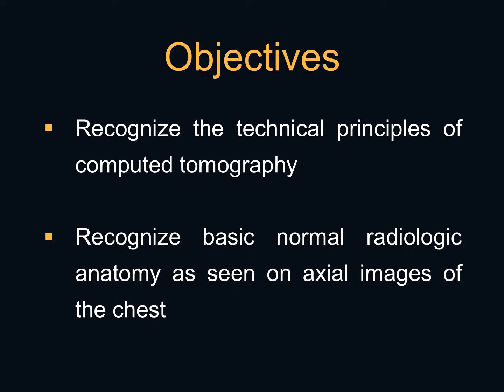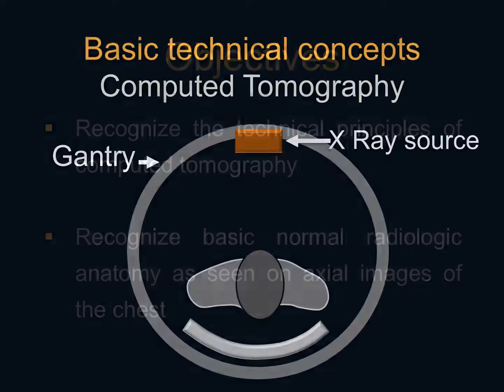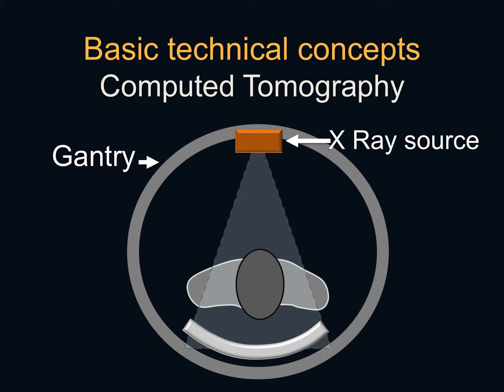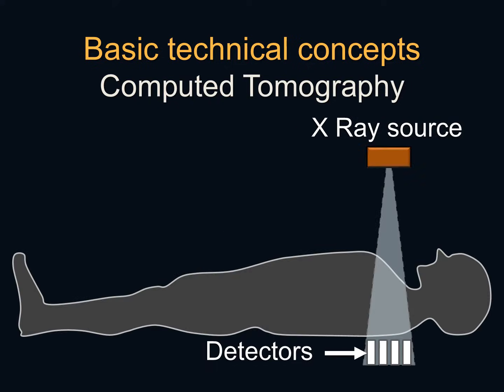The second objective is to recognize some basic normal radiologic anatomy as we see it on axial images on chest CTs. So how does CT, or computed tomography, work? When we're doing a CT scan the patient lies in a bed and goes into a gantry. The gantry is this big cylinder that contains the x-ray tube or x-ray source, which shoots a very narrow beam of x-rays through the patient to reach the detectors on the opposite side.